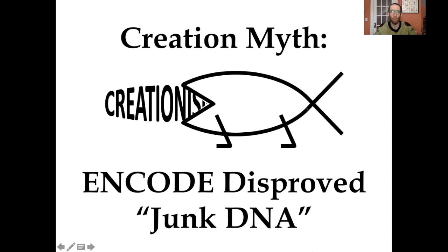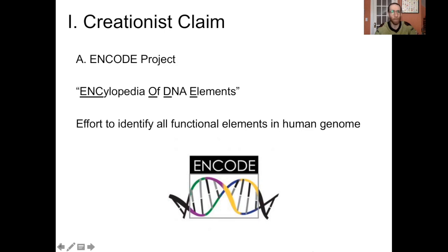Before we get into the specifics of the creationist claim here, we need a bit of background, like what in the world is ENCODE? ENCODE refers to the ENCODE Project, which stands for Encyclopedia of DNA Elements. This is a follow-on to the Human Genome Project, and it's an effort to identify all of the functional elements present in the human genome — basically, what's there and what does all of it do?